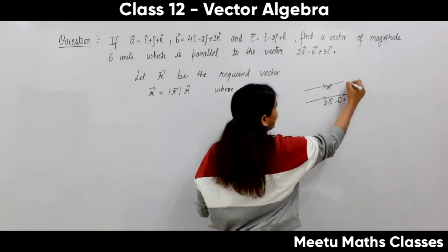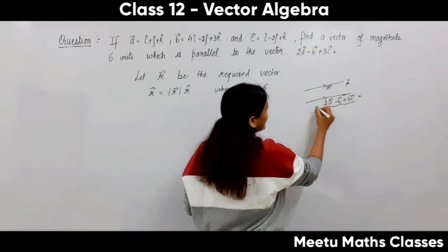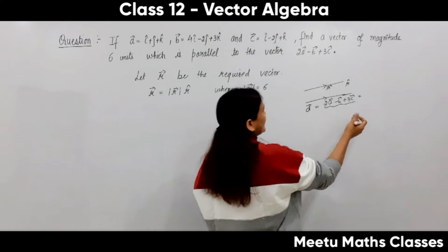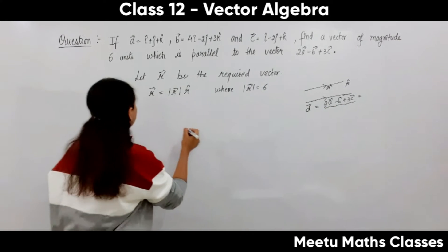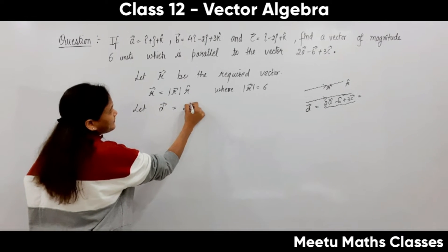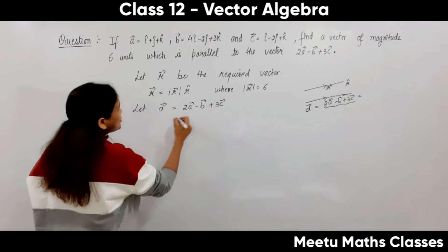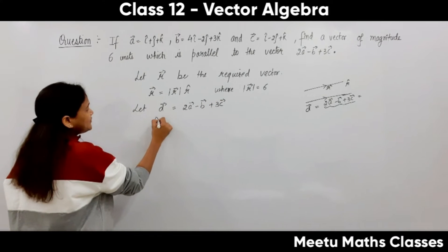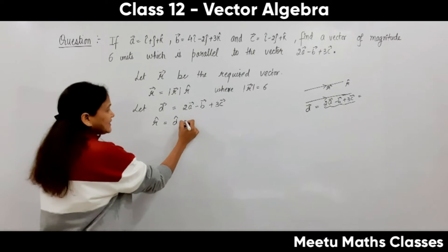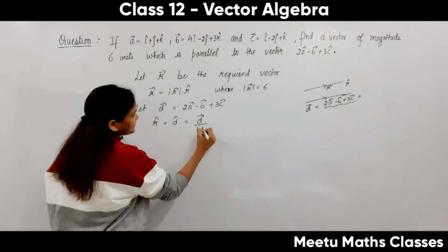So the direction vector along R equals the direction vector along D, where we let vector D be 2A minus B plus 3C. The direction vector of R equals the direction vector of D, and that equals vector D divided by its magnitude.